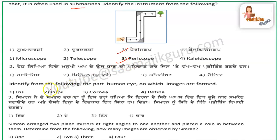The next question is: identify from the following part of the human eye on which the images are formed.